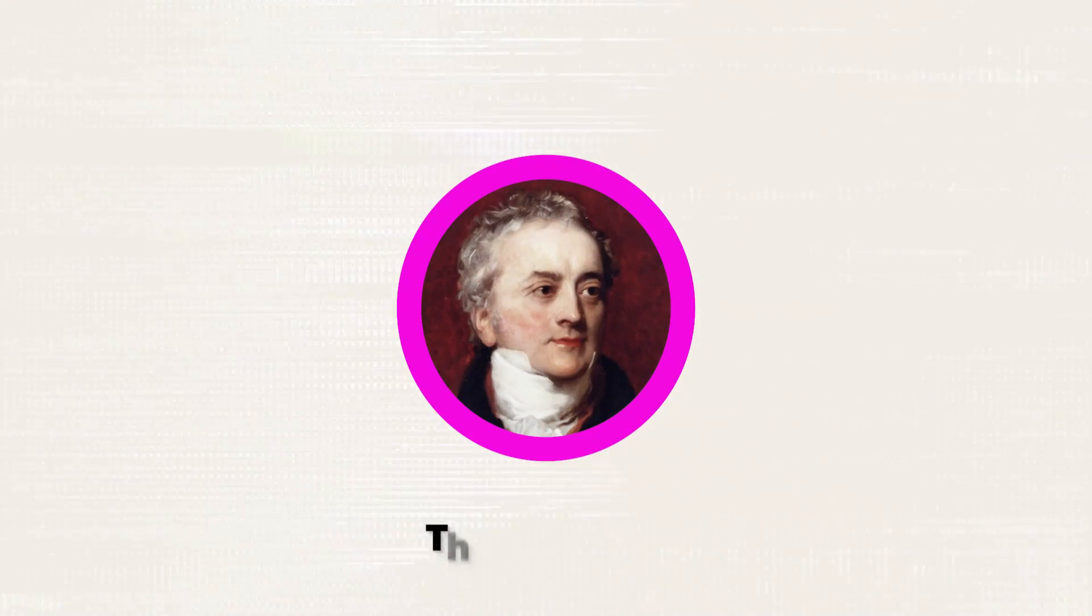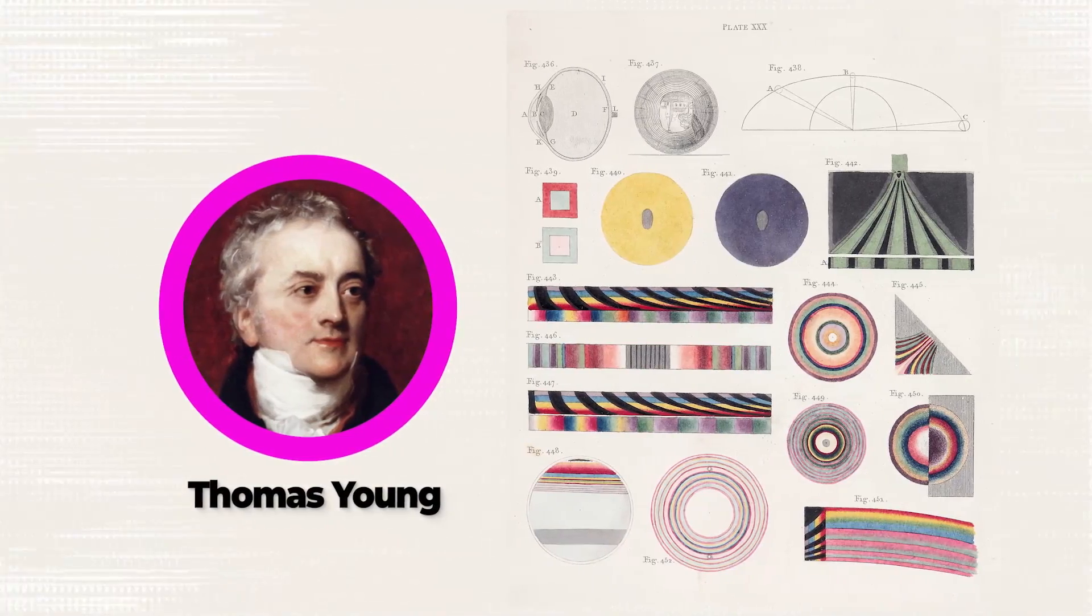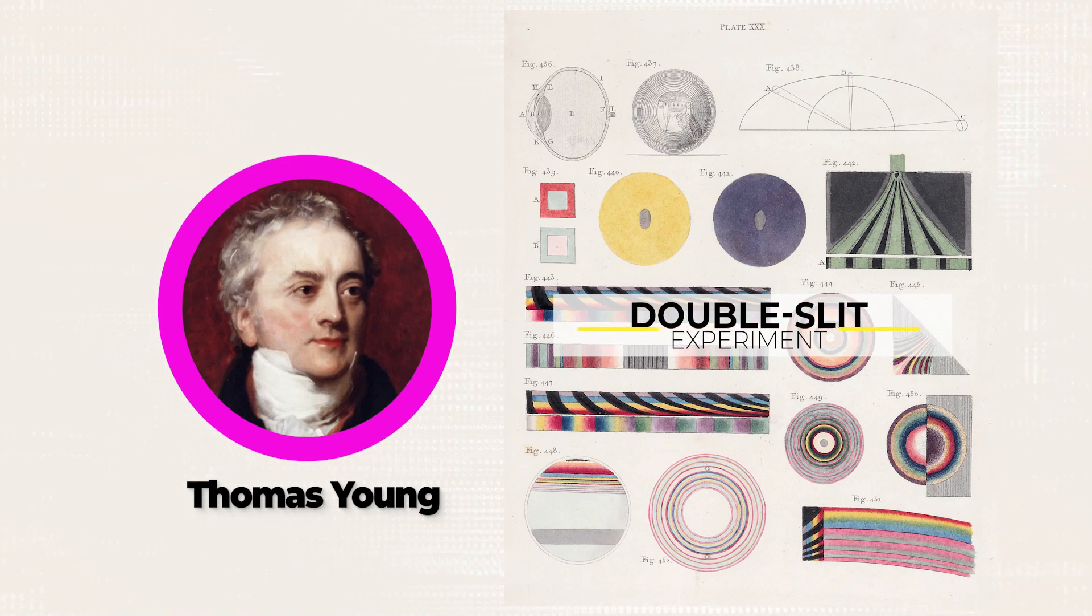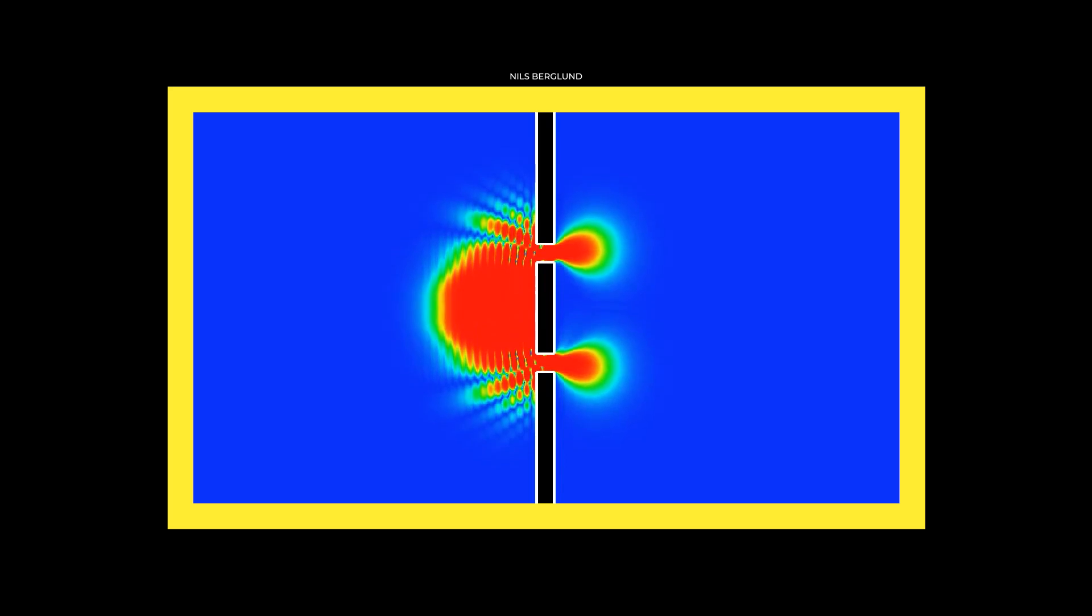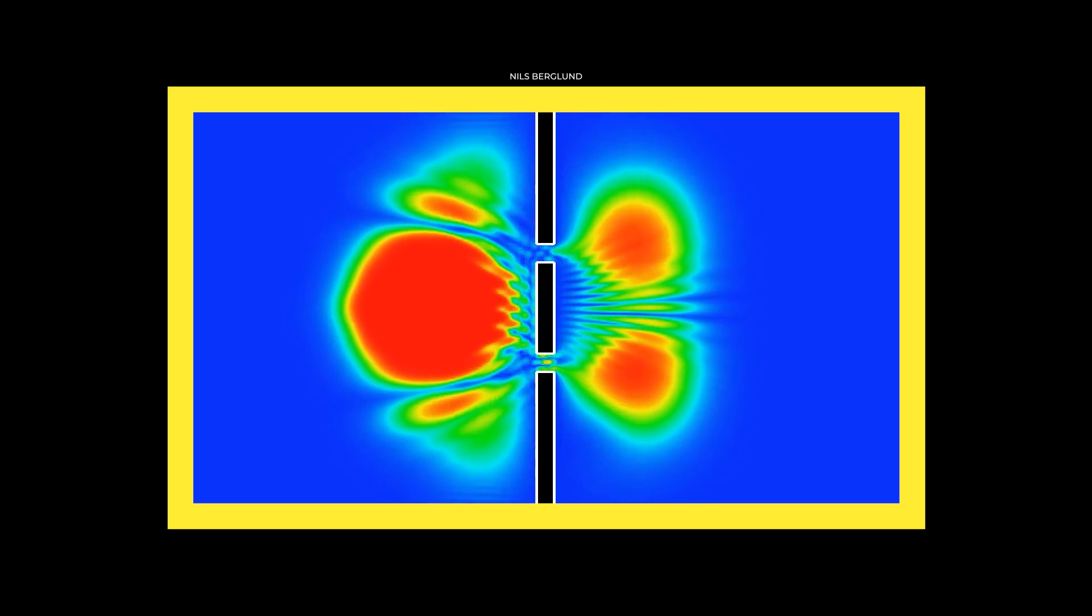In the 19th century, British polymath Thomas Young designed a genius idea known as the Double Slit Experiment to see whether light behaved as a particle or a wave. When Young did the experiment, he showed that light that passed through two slits resulted in an interference pattern on the detector screen.